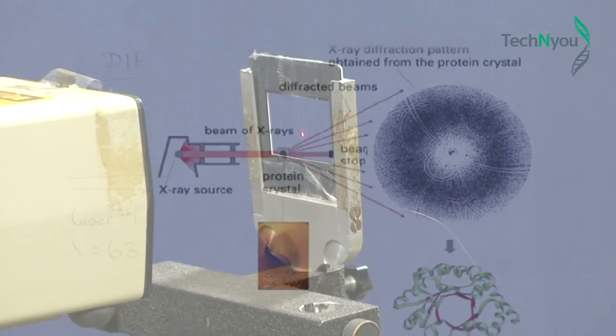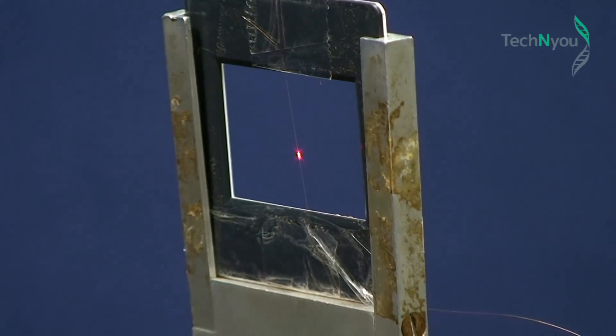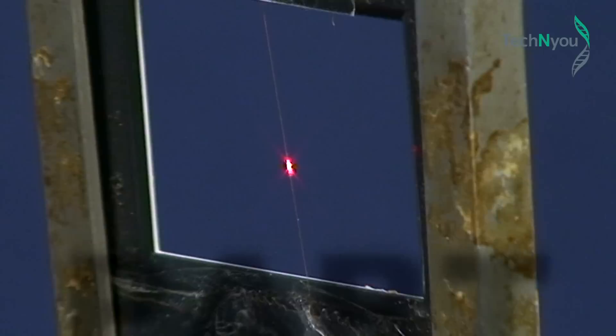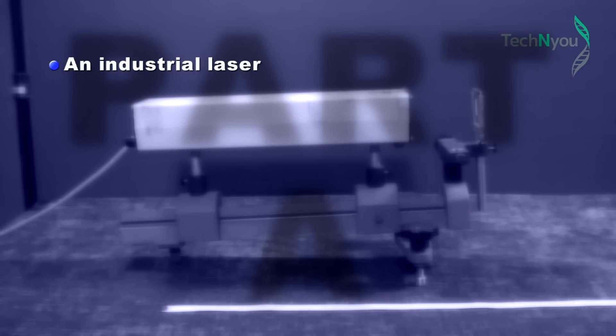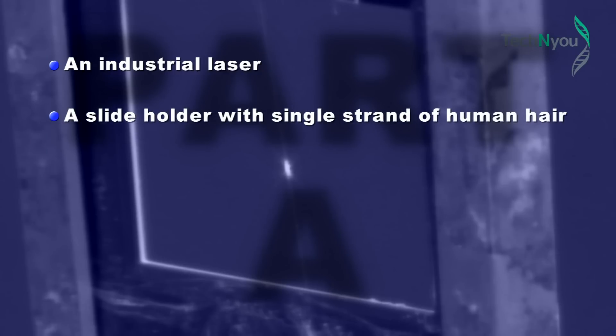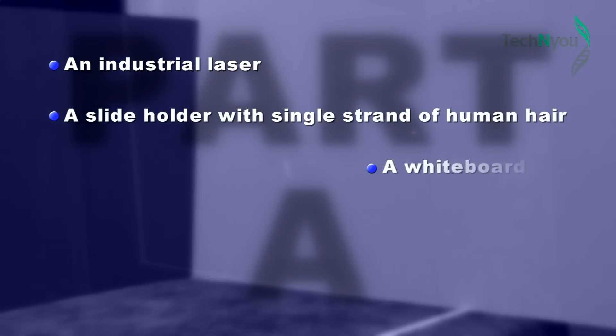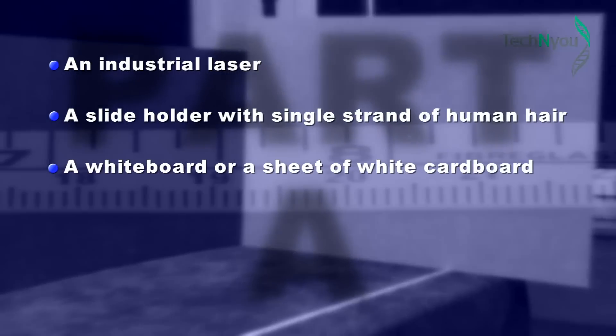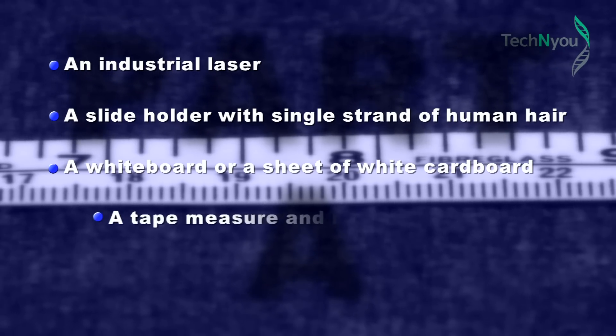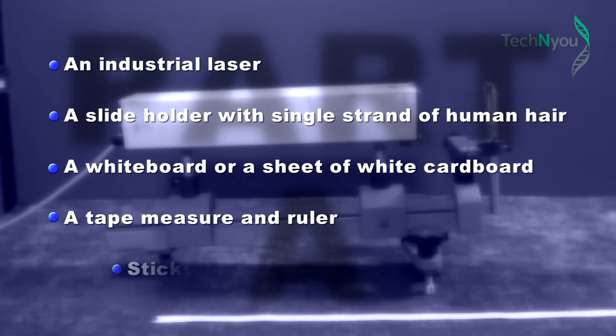We use a simple laser beam to measure the diameter of a human hair. The equipment required for Part A: an industrial laser, a slide holder with a single strand of human hair, a white board or sheet of white cardboard, a tape measure and a ruler, and sticky tape.